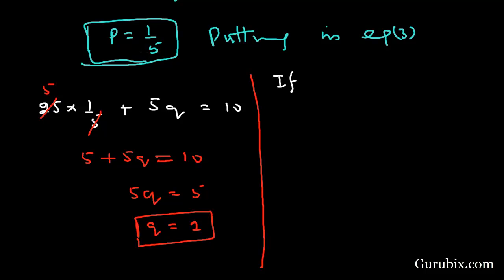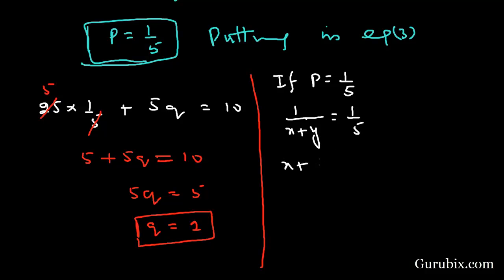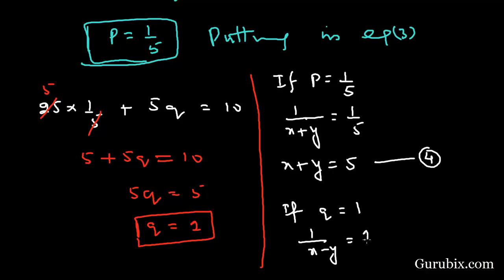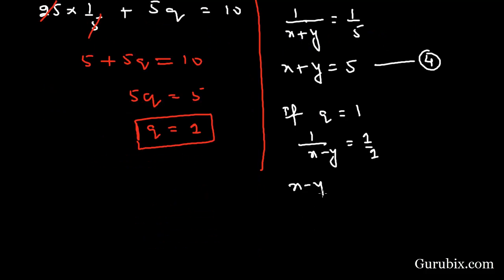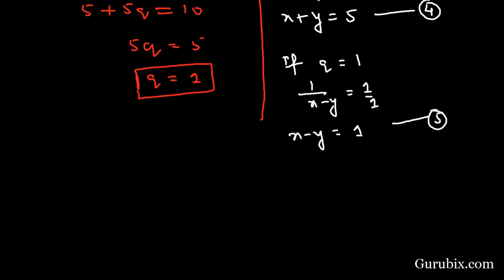Now we have the values of both p and q. Since p equals 1 over 5, and p is defined as 1 over (x plus y), we get 1 over (x plus y) equals 1 over 5, which means x plus y equals 5 — let this be equation number 4. Similarly, since q equals 1, we have 1 over (x minus y) equals 1, so x minus y equals 1 — let this be equation number 5.